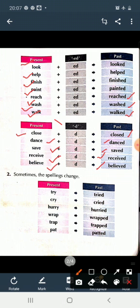Now children, see next example. Sometimes the spellings change. जब हम verbs की second form बनाते हैं, तो कभी-कभी spelling change हो जाते हैं. जैसे try. First word is try. Try की past form होगी tried.